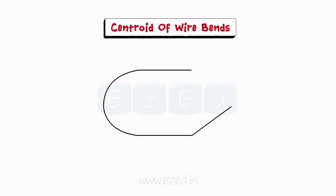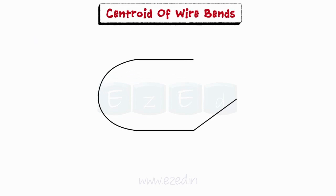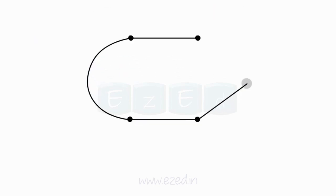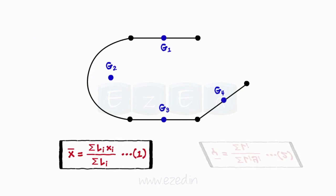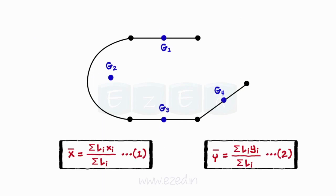A wire bend can be obtained by adding up a number of regular lines. To locate the centroid of a wire bend, we simply divide it into simple regular lines, find their centroids, and then use the relations given above to find the centroid of the wire bend.